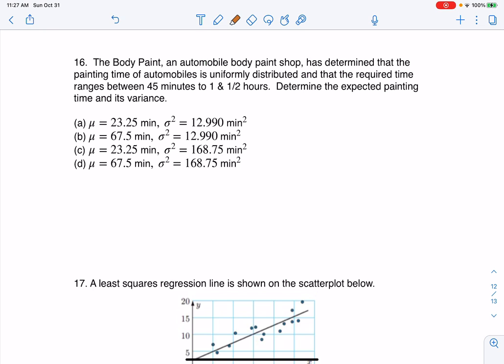So first of all, it looks like my variable here is painting time for an automobile. And if it's time, that's going to be a continuous numerical variable. But I see this buzzword, uniformly distributed. So that's going to help me here. So again, my variable in this case is going to be painting times.